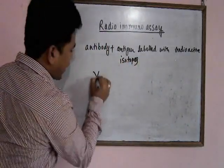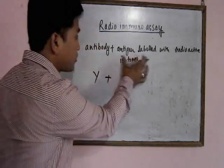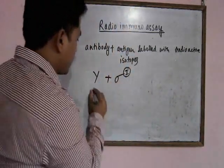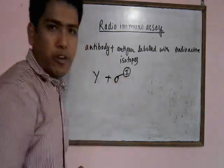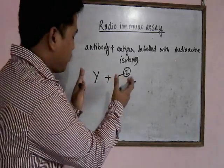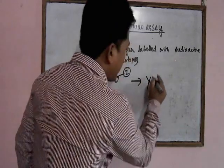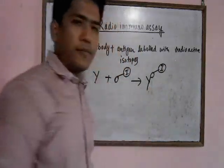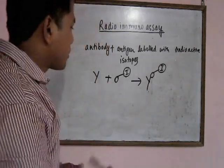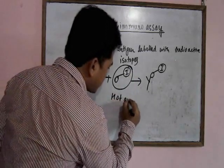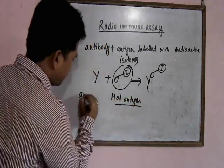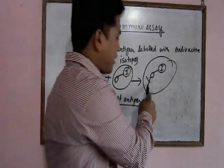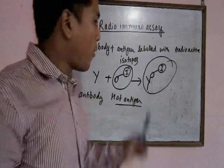The antibody is reacted with the antigen labeled with radioactive isotopes. This is the antibody and this is the radiolabeled antigen. When we allow them to react, they form the antigen-antibody complex. The antigen labeled with radioactive isotopes is called the hot antigen.